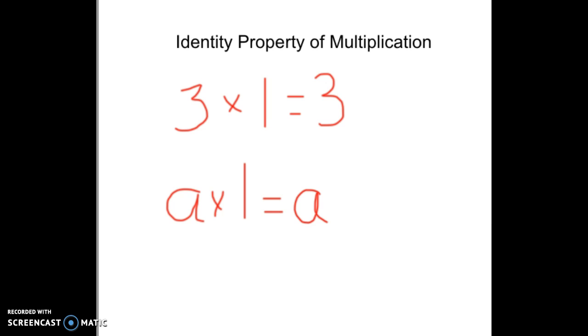What we're doing is look at the first statement. 3 times 1 equals 3. What that's saying is you can multiply any number times 1 and it won't lose its identity. 3 will still be 3.